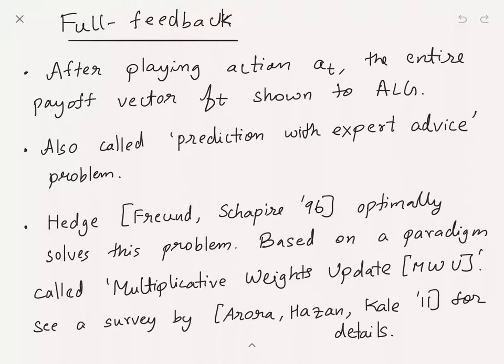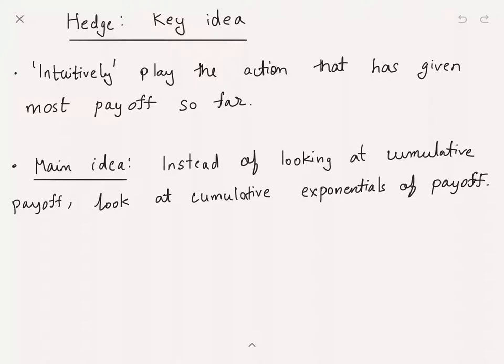Let's try to see intuitively what's the right strategy. Since after every time step you see the entire feedback, one natural strategy is to just play the action that has the maximum cumulative reward or cumulative payoff until this point. But there's a problem with that strategy. You would very quickly overfit to the actions that have good payoff in the beginning as opposed to good payoff in a different action coming at a later stage in the game. By the time you switch, it may be too slow.